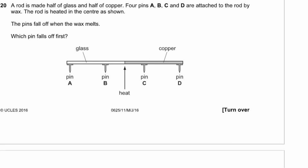Question 20. A rod is half glass and half copper, with pins A, B, C, and D attached by wax, heated in the centre. Glass is a bad conductor, copper is a good conductor. Heat travels quickly along the copper, so the wax at pin C melts first. Pin C falls off first.